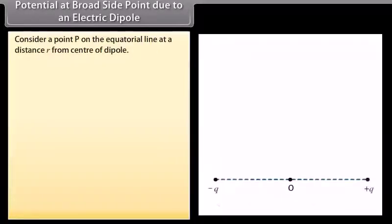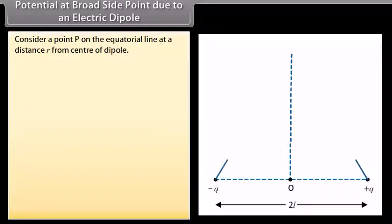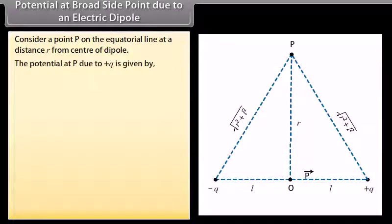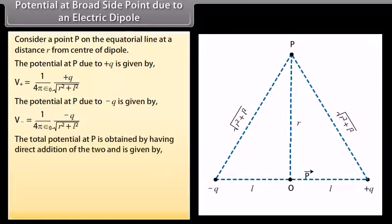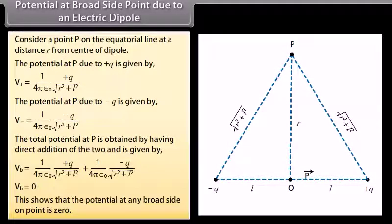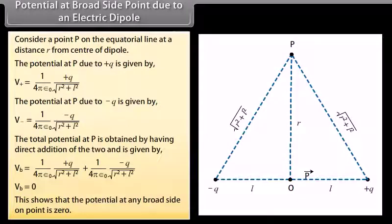For the potential at a broadside point due to an electric dipole, consider a point P on the equatorial line at distance R from the center of the dipole. The potential due to +Q is V₊ = (1/4πε₀)(Q / √(R² + L²)), and due to −Q is V₋ = (1/4πε₀)(−Q / √(R² + L²)). The total potential at P is V_B = 0, showing that the potential at any broadside-on point is zero.